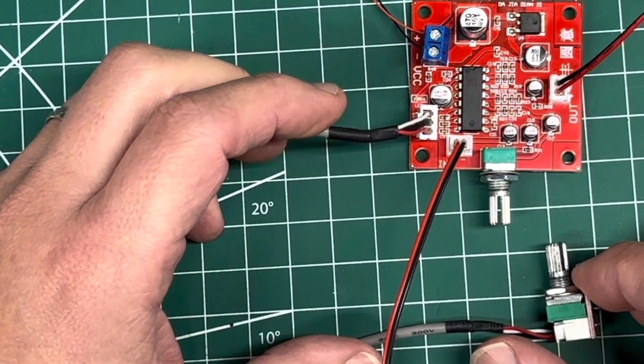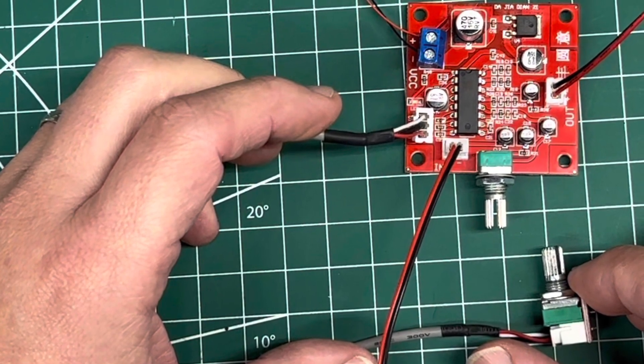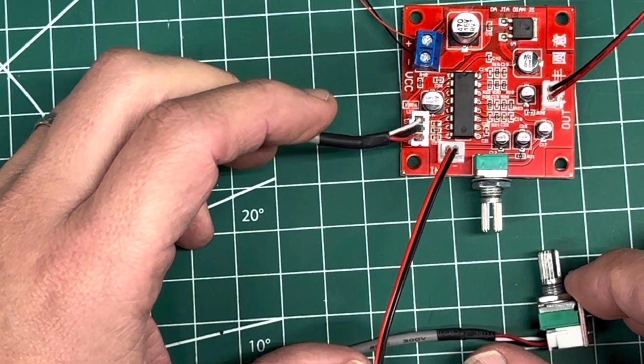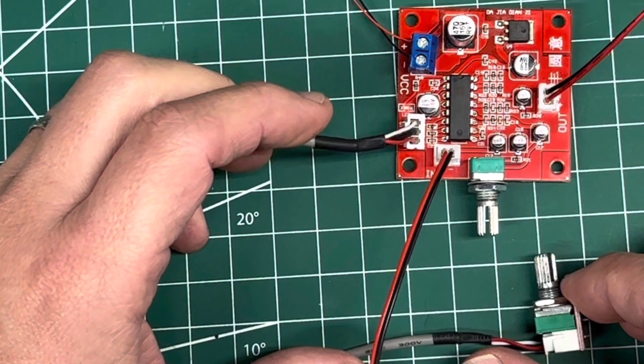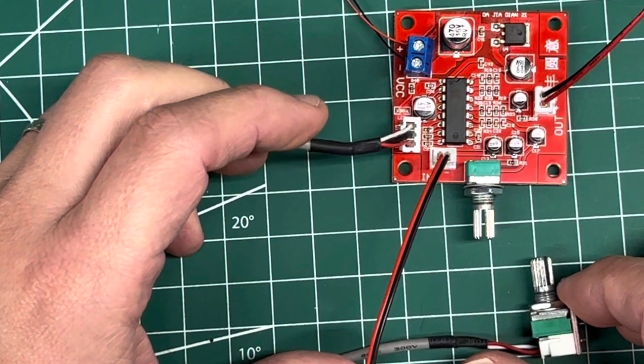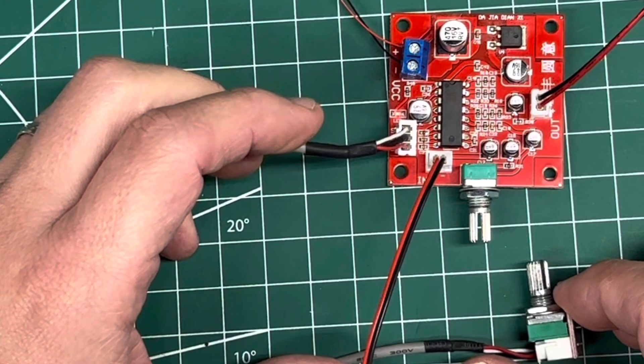So I'm modding this PT2399 reverb echo board so I can add another potentiometer and modify the reverb capabilities, specifically to integrate delay timing. Here you see the end product. Now let's see how we got there.